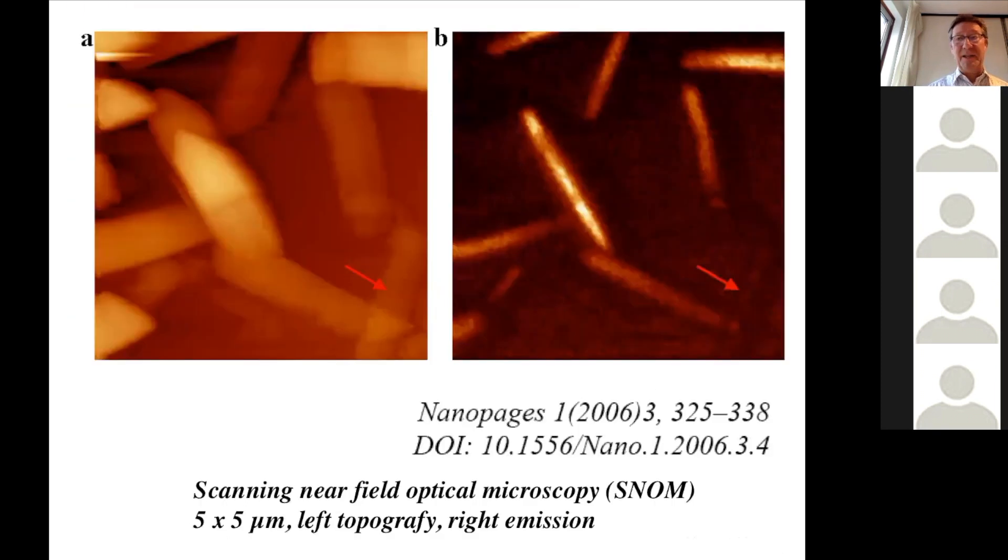Another thing is that if you take an AFM microscope and you drill a little hole in the needle, then you can put light through. So with the same principle, you can make a picture of the emission of materials. So this is the AFM picture, and on the right, it is the emission of the material. We have scanning tunneling microscopy, we have AFM, but we also have SNOM, which is near-field optical. So you can measure the emission, the luminescence of a surface on a very small scale.